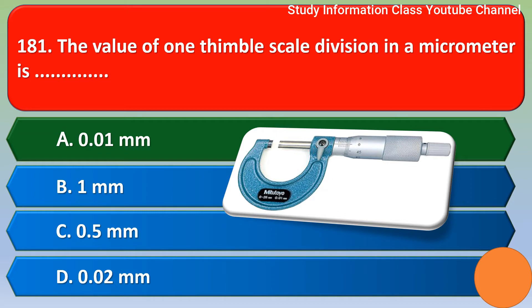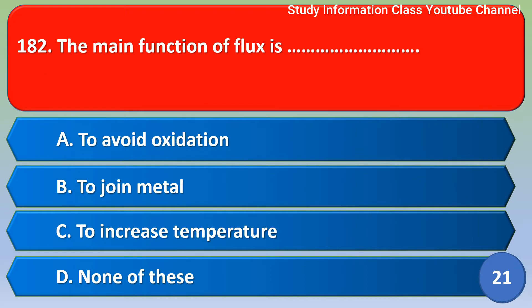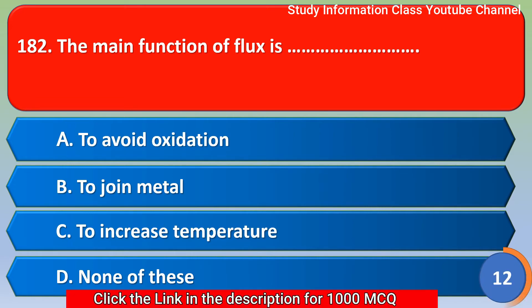Next question: the main function of flux is option A to avoid oxidation, option B to join metal, option C to increase temperature, option D none of these. The correct answer is option A: to avoid oxidation. The main function of flux is to avoid oxidation.